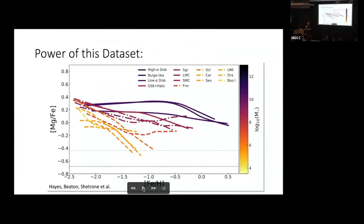Oscar Jimenez, CCUB Barcelona: On the 2D plot with the two-process model, the Type Ia and core-collapse axes don't look fully orthogonal — isn't there degeneracy? Response: Because no element is pure, you train on a set of elements that is predominantly one process or the other — this is well explained in the 2022 paper, which is 80 pages long for good reason. You have to fit to a set of well-measured elements that are predominantly coming from one process.